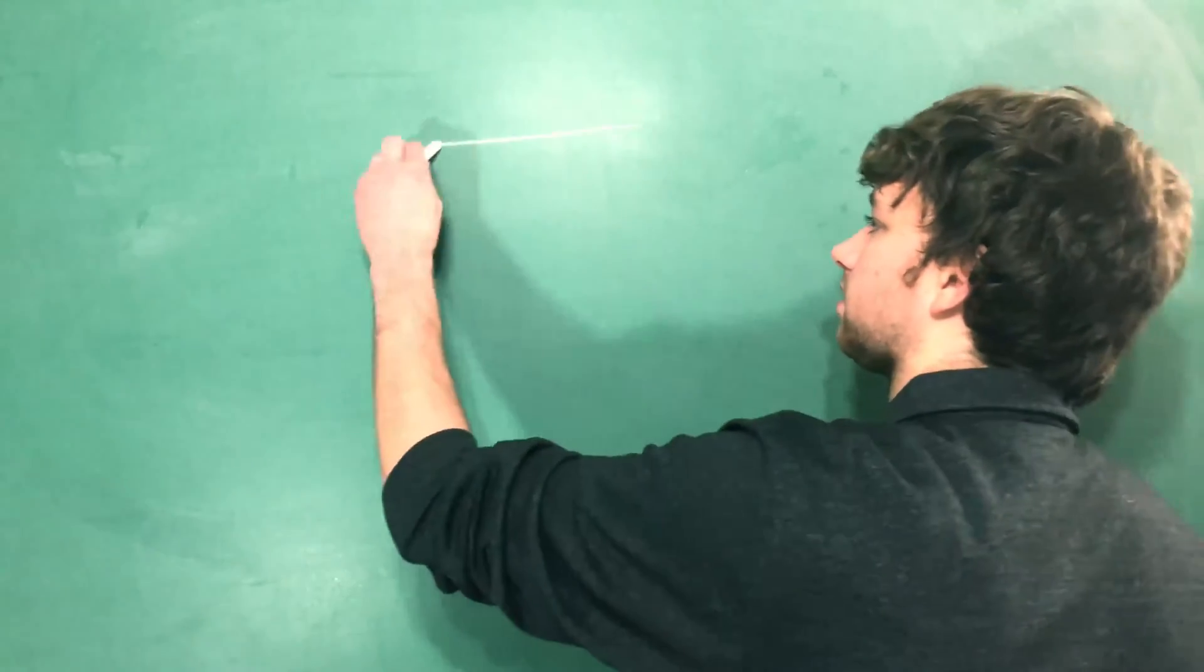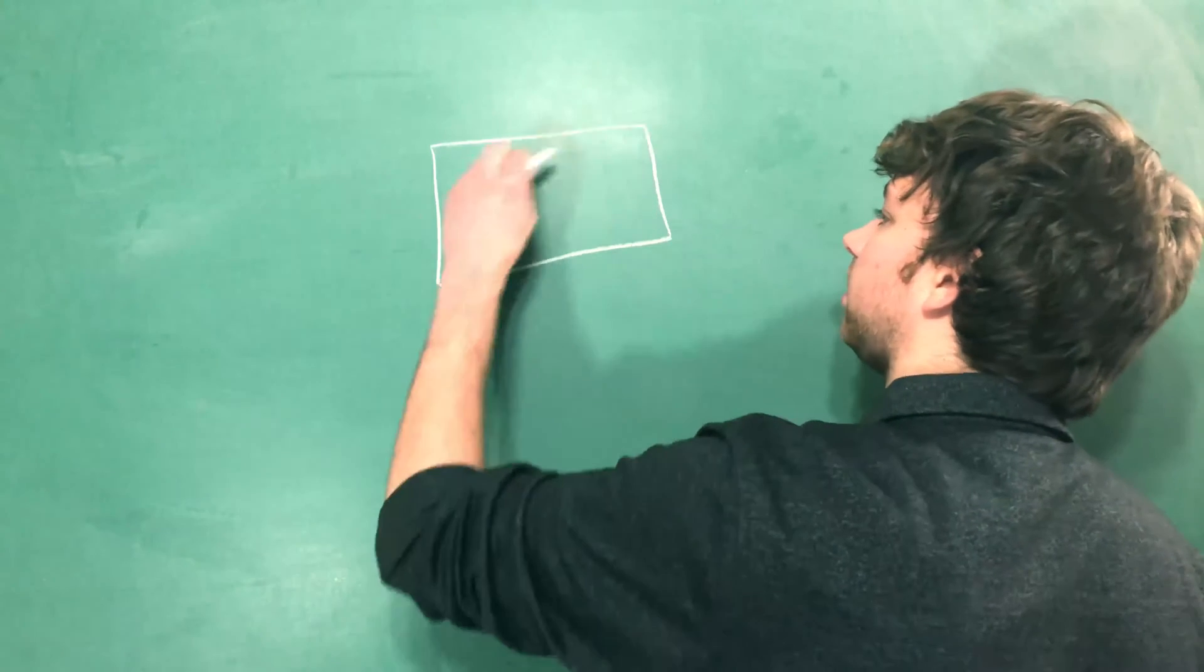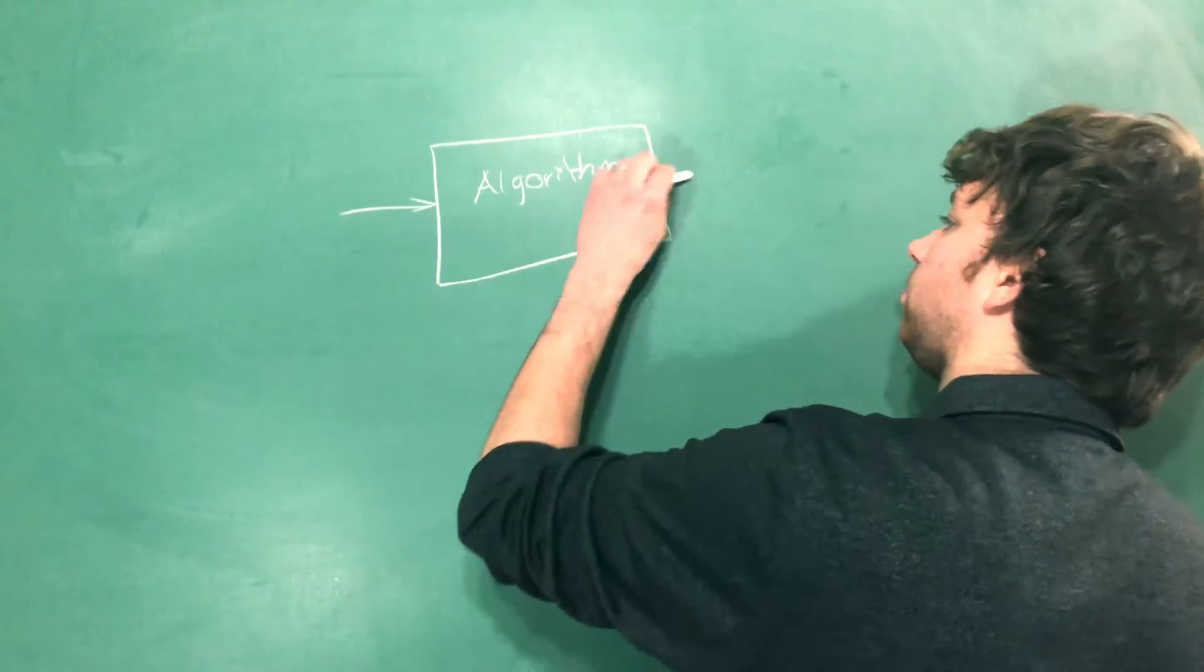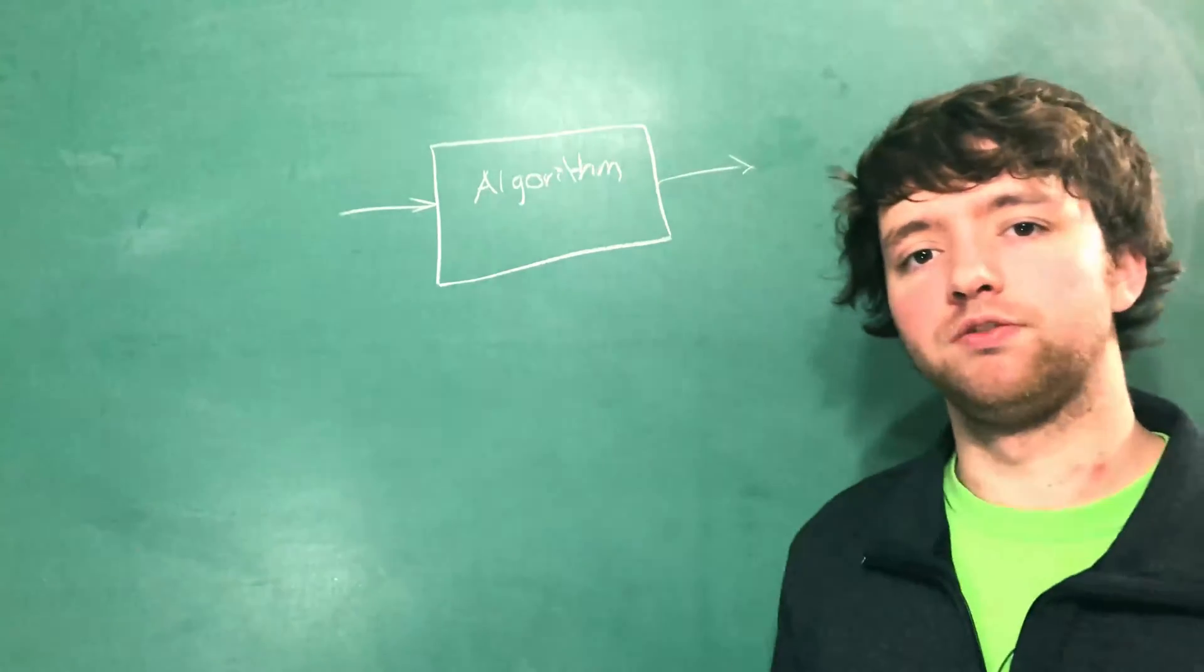What is an algorithm? An algorithm is just a step-by-step process that you can use to process some information. So I like to think of it like this. Here's an algorithm, and you have an input, and you have an output. So if I told you, for example,